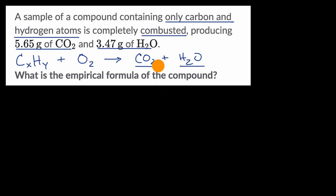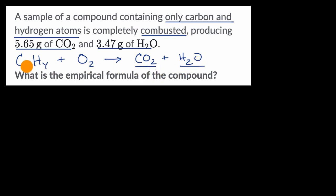What we need to do is: from the given grams, figure out how many moles of carbon dioxide we have and how many moles of water we have. From that, we can figure out how many moles of carbon and how many moles of hydrogen we started with. If we look at those ratios, we can come up with the empirical formula of the compound.